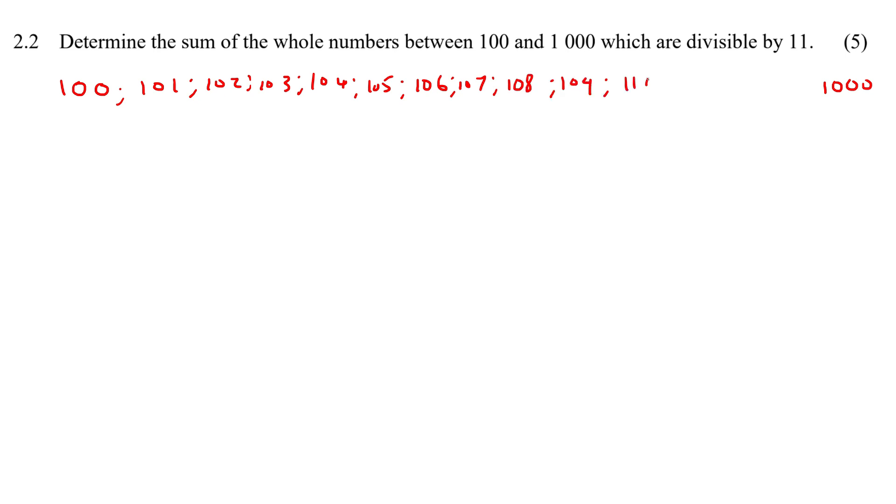You get the idea, right? 110 all the way to 1000. Now they want the ones that are divisible by—I mean, sorry—they want the ones that are divisible by 11.